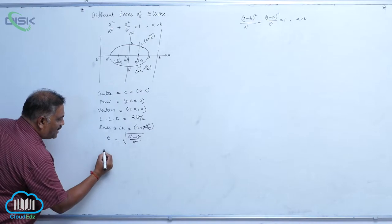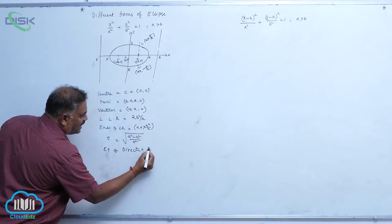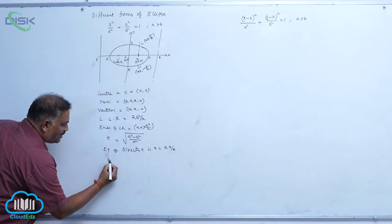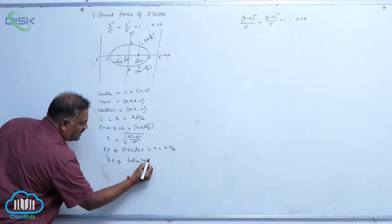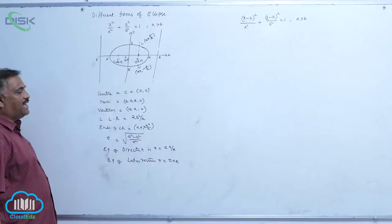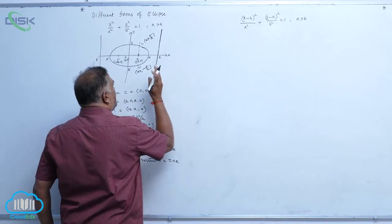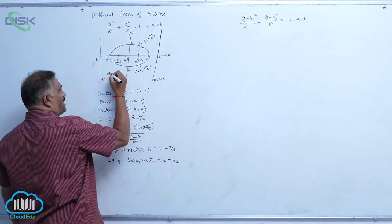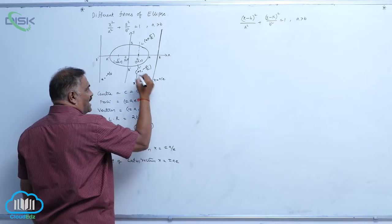The equation of the directrix is x = ±a/e. The equation of the latus rectum is x = ±ae. You can see the directrix lines are parallel to the y-axis at x = a/e and x = −a/e, while the latus rectum is at x = ±ae.